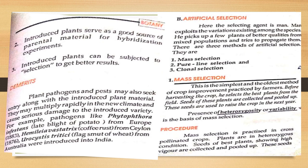In the case of selection, there are two types: natural selection and artificial selection. In natural selection, nature selects the high-yielding variety. In artificial selection, the selecting agent is man — man exploits the variation existing among species, picks up a few plants of better qualities from the mixed population, and tries to propagate them. There are three methods of artificial selection: mass selection, pure line selection, and clonal selection.